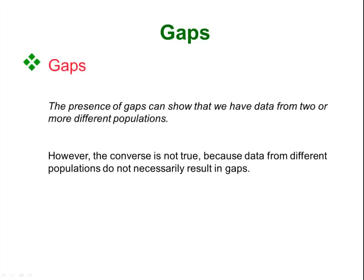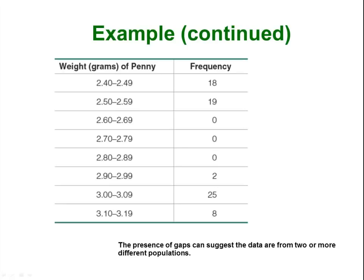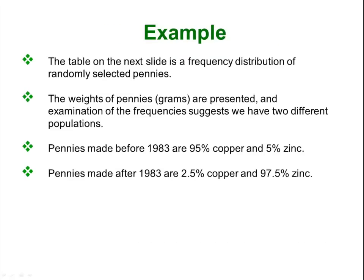If we have gaps in our data, they will show up in these tables. It is a good way of seeing if maybe something odd is going on — that everything is clumped together in two groups with a big gap in between. An example would be a frequency distribution of randomly selected pennies and their weights. You have pennies made before 1983 and pennies made after 1983, and from the distribution you can see one group of pennies in the smaller weight class and another group in the higher weight class with nothing in between. This suggests the pennies come from those two different sets — some pre-1983 and some post-1983.